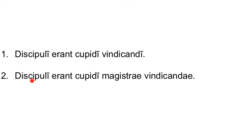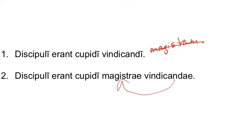Now let's look at the next one: Discipuli erant cupidi magistri vindicandai. How thoughtful — the students were eager of avenging the teacher. So we take what would have been the direct object, magistram, and do the flip-flop. Cupidi takes a genitive, so we put the teacher in the genitive case and modify magistri with a gerundive in the same case, number, and gender as its antecedent, the teacher.